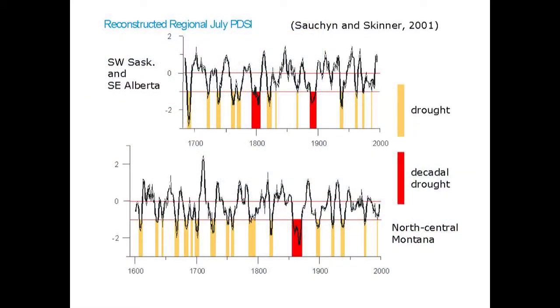Another big fear: paleoecologists using tree rings as a proxy for drought found that the 20th century was unusually wet. Going back before the 20th century, there are yellow and red areas indicating droughts — the red ones lasted a decade or more, the others lasted several years. It seems unlikely we'll have two centuries in a row with above-normal precipitation.